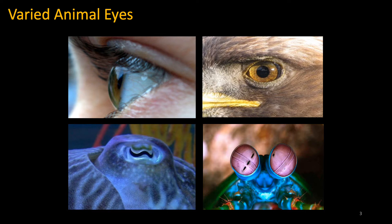Birds have two fovea: one that operates similar to ours and another specifically for tracking slow-moving objects. In the ocean, cuttlefish leverage selective pupil contraction to see in dark areas, and mantis shrimp adaptively slide a polarization band to enhance contrast based on the polarization structure of the light traveling through the water.